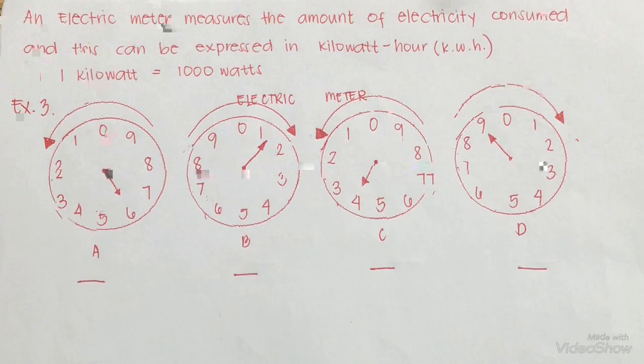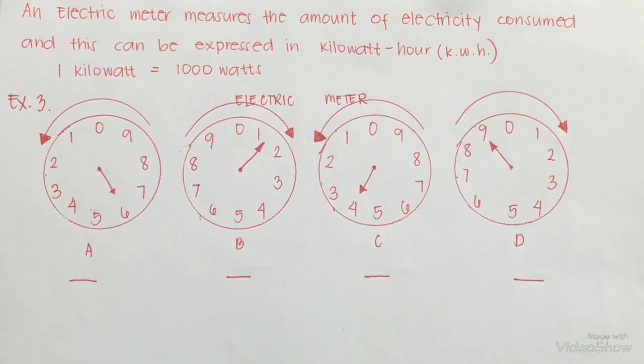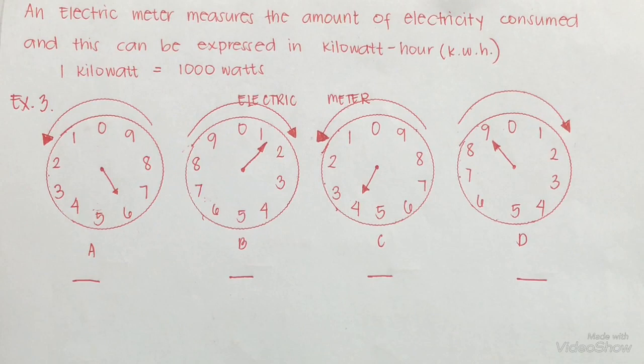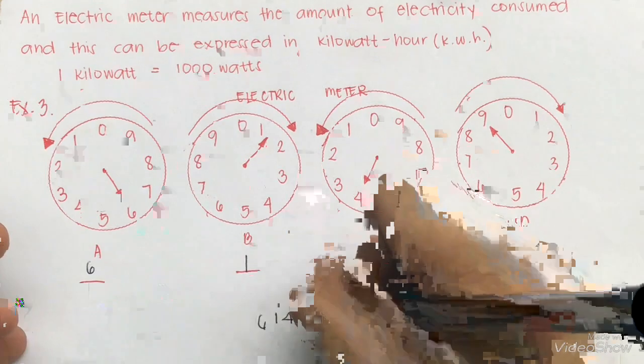An electric meter has four dials. The pointer of each dial moves 10 times as fast as the dial on the left, and the pointers of dials next to each other move in opposite directions. The pointers of dials B and D move clockwise, while dials A and C move counterclockwise. If the pointer is between two numbers, record the smaller number. The reading of the electric meter shown above is 6149 kilowatt hours.